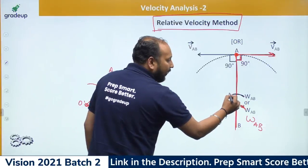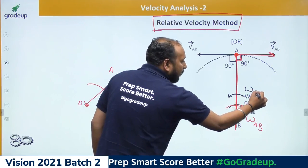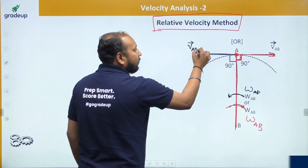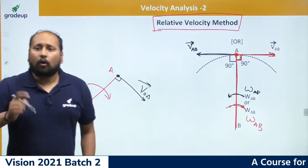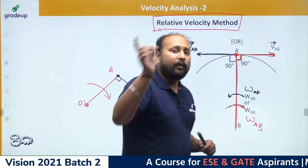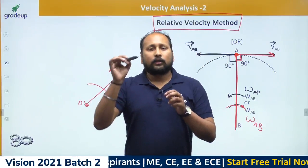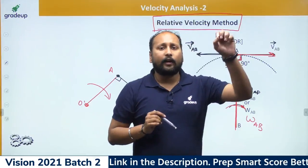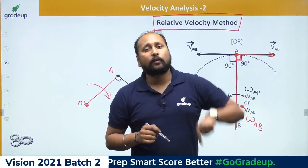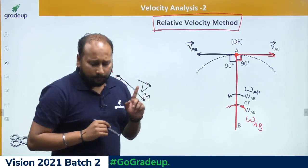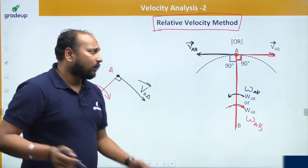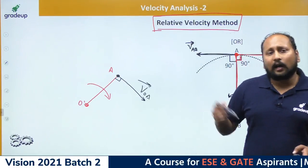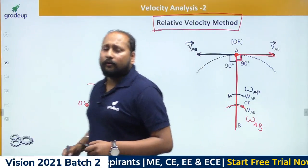Similarly, if omega is in the anticlockwise direction, the velocity V_AB will be in the corresponding perpendicular direction. Always remember: whenever a body moves in rotational or circular motion, you draw a tangent or perpendicular line at that point — that gives the relative velocity with respect to the fixed point. This is basic circular motion from class 12 onwards.